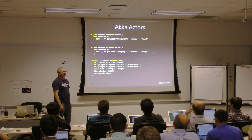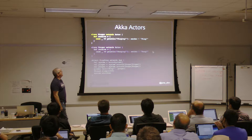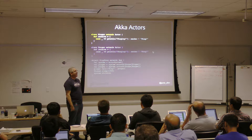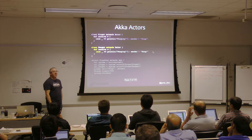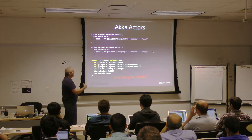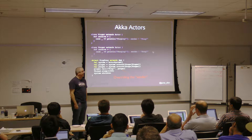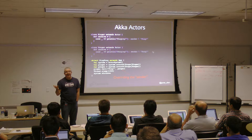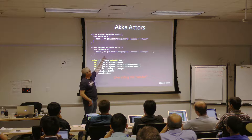A simple example: a pinger and a ponger. The pinger actor extends the actor trait and defines a receive block — whenever it gets any message, it prints that it's pinging and sends a response back to whoever sent it. The ponger similarly has its own receive block and sends a pong back. At the bottom is the bootstrapping object: create the actor system, create instances of pinger and ponger, then send a message to the pinger specifying who sent it.